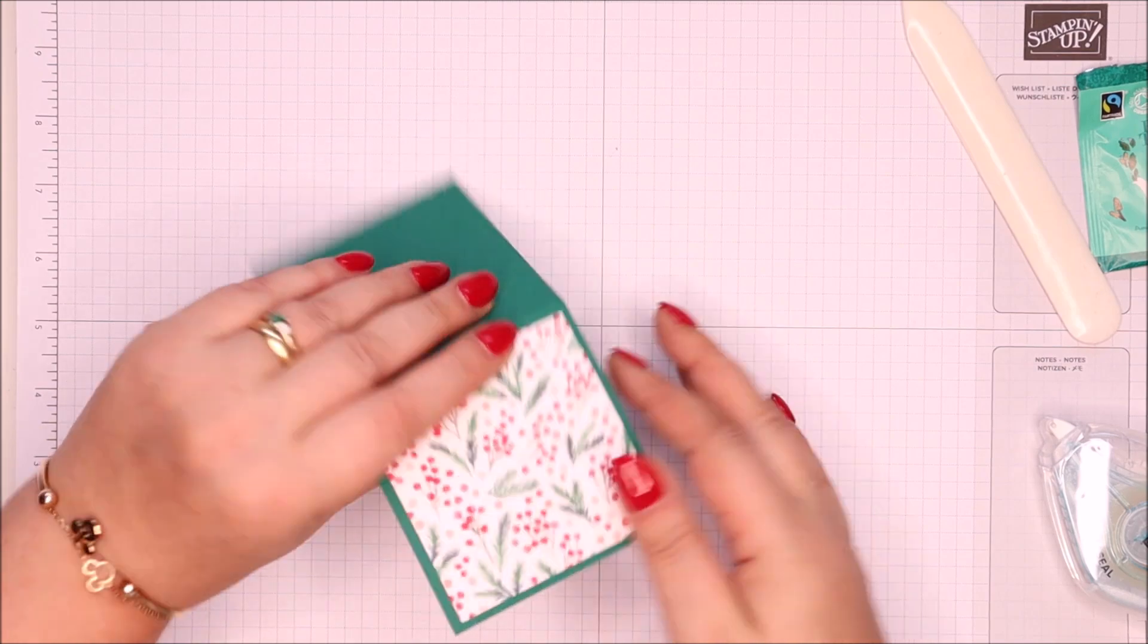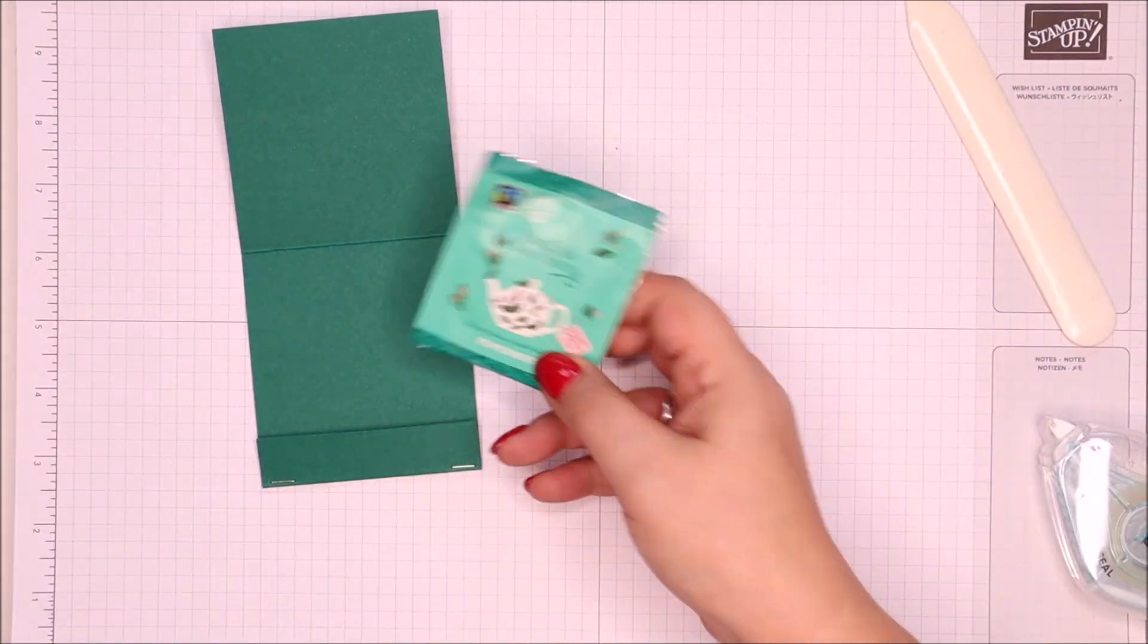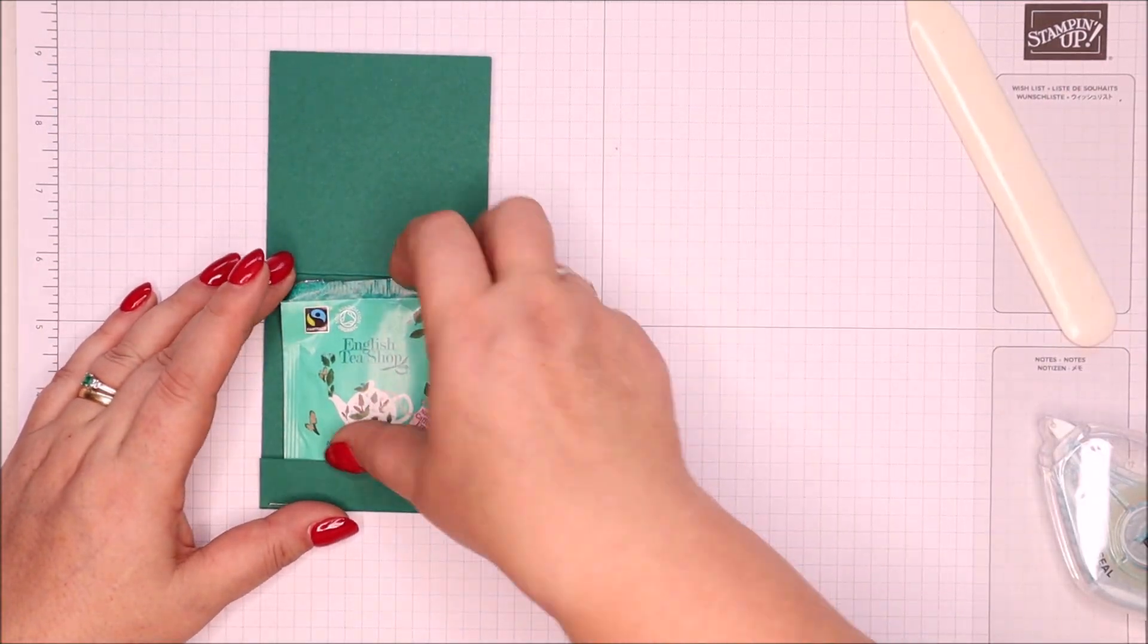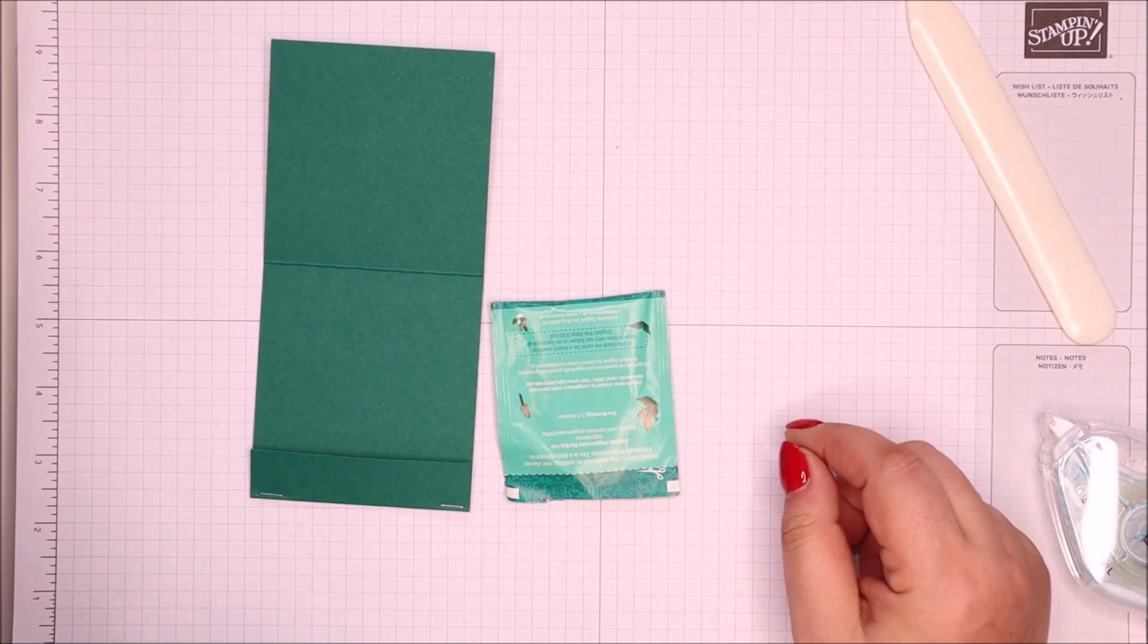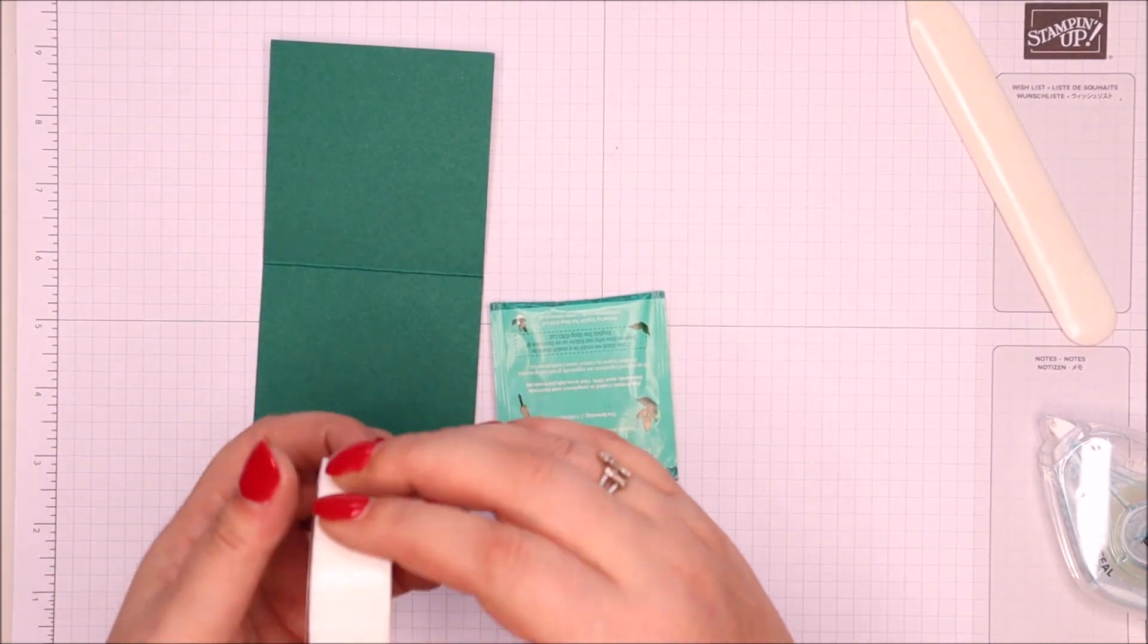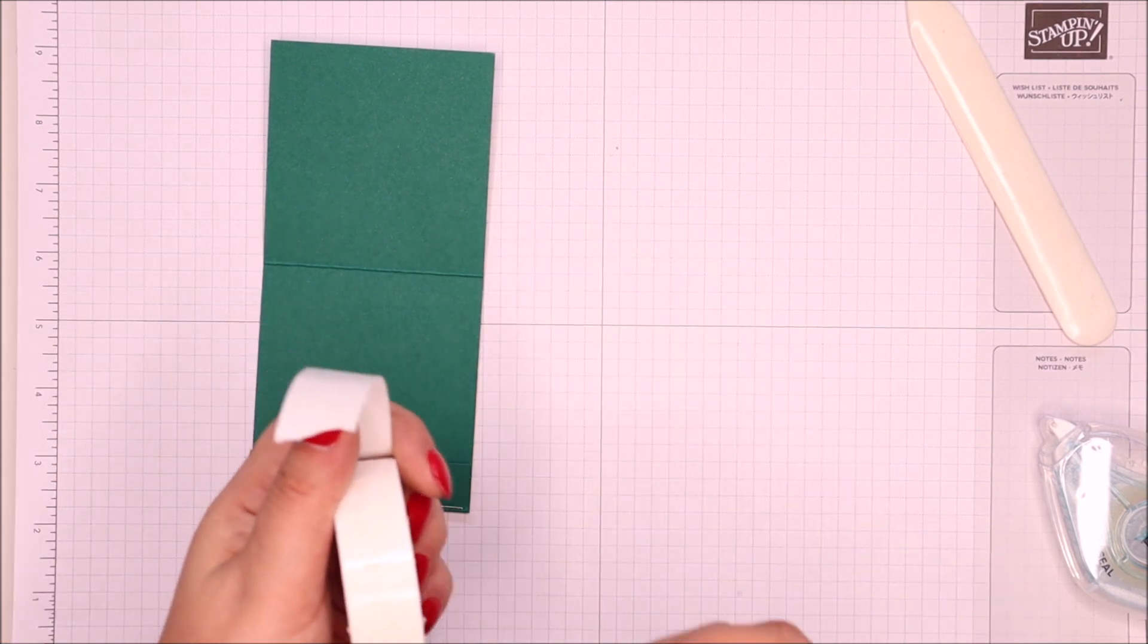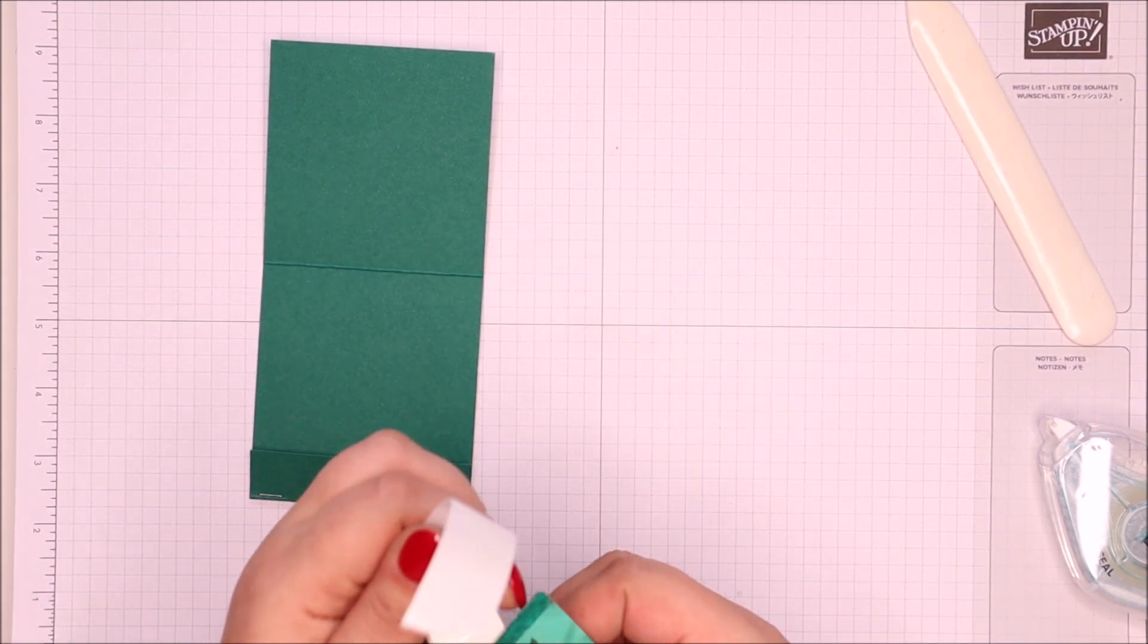Okay. Then teabag in. And I would suggest popping a little glue dot on the back will help to keep it in place. If you don't want teabags falling out, do you? Runaway tea.